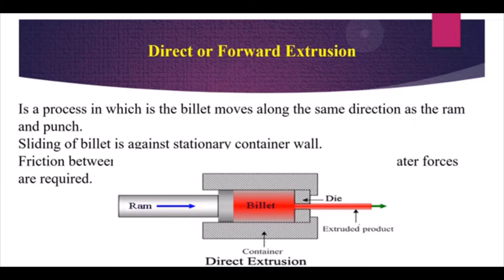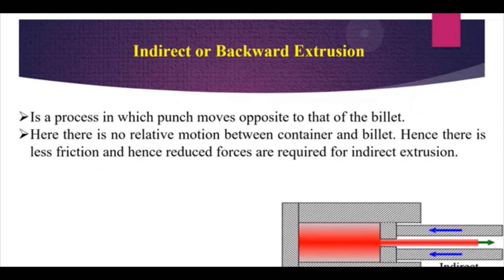In direct or forward extrusion, a ram pushes a billet through a container toward a die, and the extruded product comes out in the same direction as the ram movement. The billet slides against the stationary container wall, creating friction, so larger lateral forces are required. In indirect extrusion, the punch moves in the opposite direction to the finished product, so there is no relative motion between the container and billet — this results in less friction and reduced forces compared to direct extrusion.